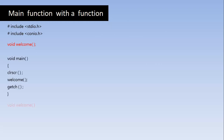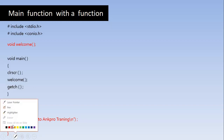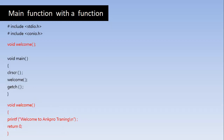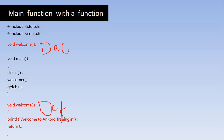Here is an example of a function where we have declared the welcome function at the top and defined that function at the bottom, below the main. The function definition is here — this is called the function definition, and this is called the function declaration.